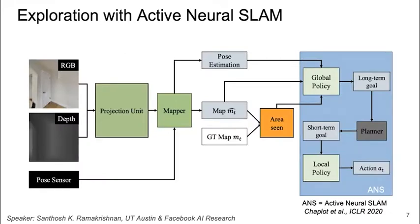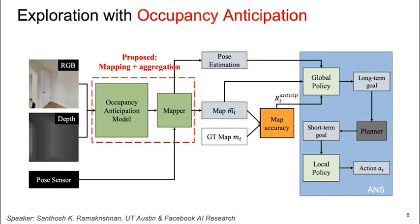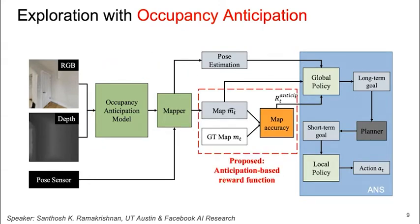Next, we evaluate the impact of anticipating occupancy for exploration and navigation. We adapt the recently proposed Active Neural SLAM architecture, which achieved state-of-the-art exploration and navigation performances and won the Habitat Challenge in 2019. We modify this architecture in two key ways to incorporate anticipation. First, we replace the mapping module with our proposed anticipation model along with a novel aggregation strategy to account for anticipation uncertainty. Next, we reward the agent based on the map accuracy rather than the area seen. This encourages the agent to cover the environment intelligently by anticipating instead of exhaustively visiting all areas.